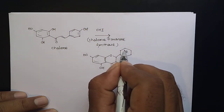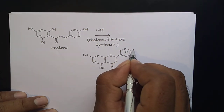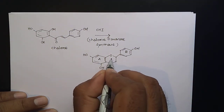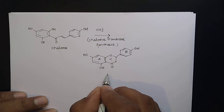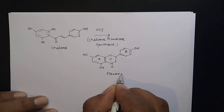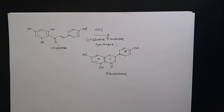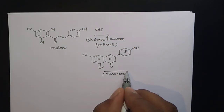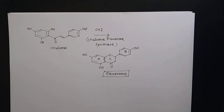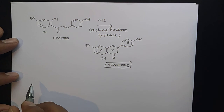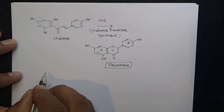This enzyme brings about ring formation — you can see there is a ring formation of one compound. This gives us a structure with a single bond, then a double bond, forming the new ring. This is the A ring, this is the C ring, and this is the B ring — and this is called flavanone. This is a very important intermediate and part of the flavonoids.